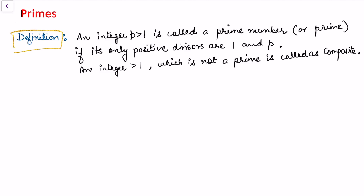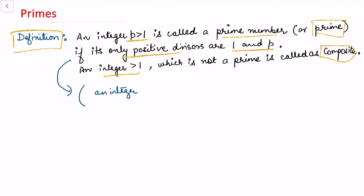In this video I'll be talking about primes. We say an integer p greater than 1 is called a prime number if its only positive divisors are 1 and p. An integer strictly greater than 1 which is not a prime number is called a composite number. If we consider all divisors, then an integer a greater than 1 is prime if its divisors are plus or minus 1 and plus or minus a.